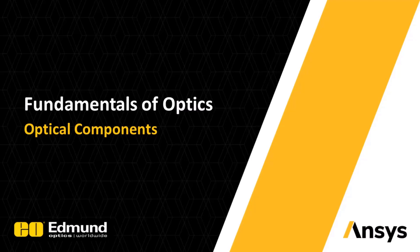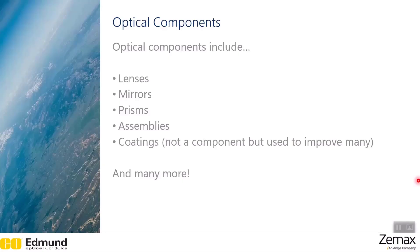Welcome back. In this next video, we will be covering the topic of optical components. Optical components include but are certainly not limited to things like lenses, mirrors, prisms, and assemblies. And while coatings in itself is not necessarily an optical component, it is used to improve many, so we will talk about those. There are many more different kinds beyond the scope of this course, but you may feel free to explore some more on your own time.